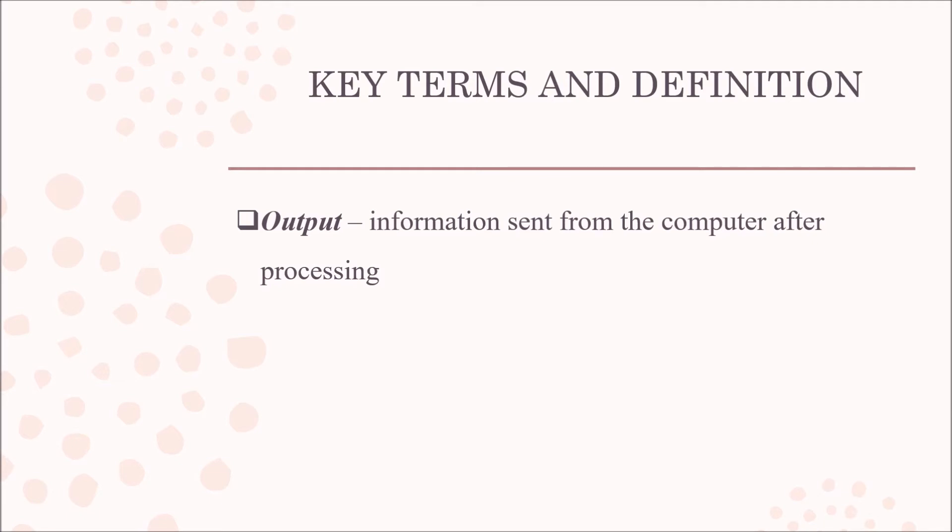After data has been processed by the computer CPU, it is then either stored or outputted. Outputted information is simply information that's sent out of the computer after it has been processed.